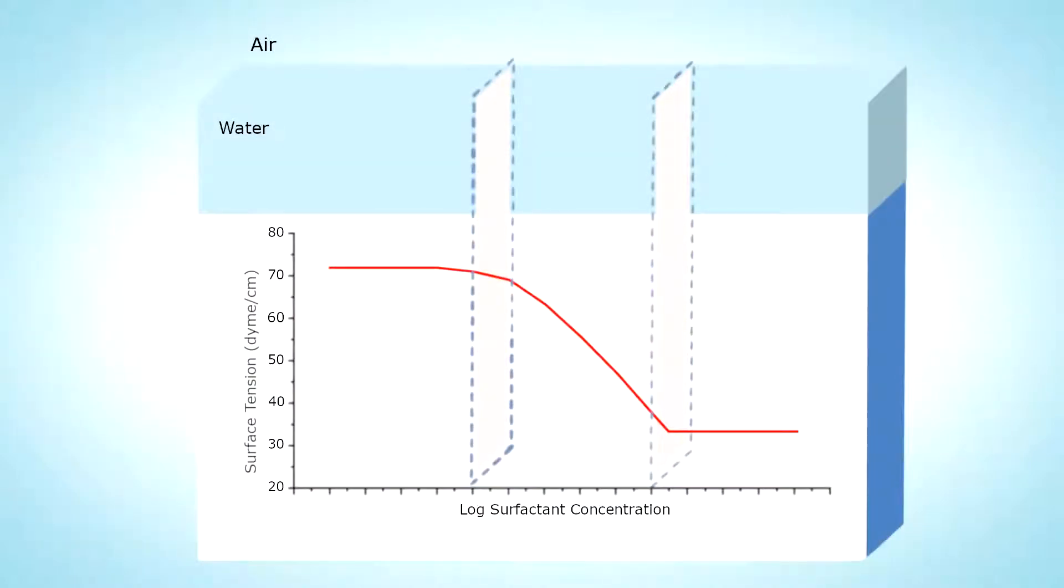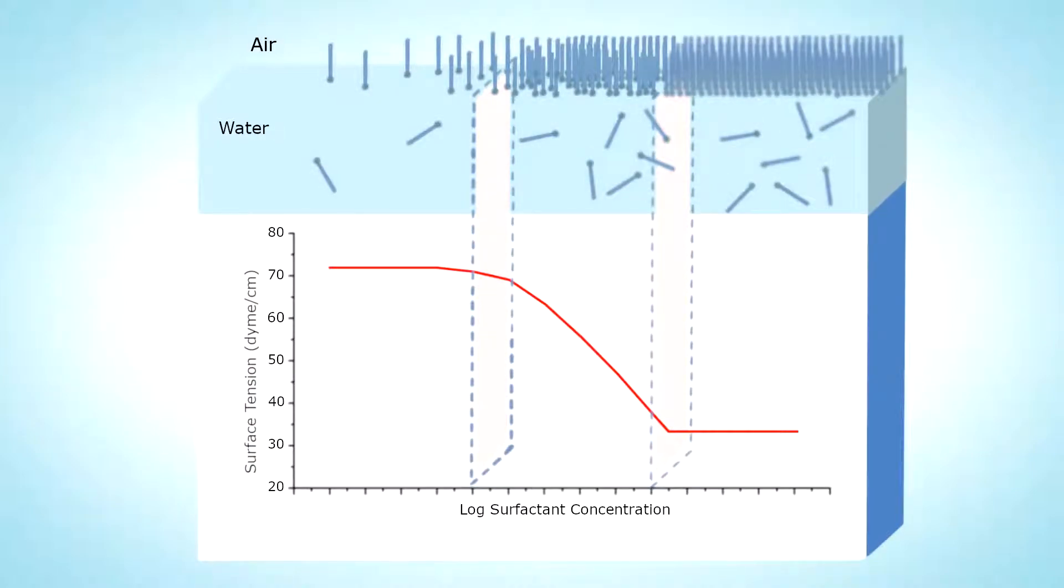Surface tension decreases as surfactant concentration increases until the interface becomes saturated. Above this point, called the critical micelle concentration or CMC, monomer concentration stays constant and micelles are present in solution.